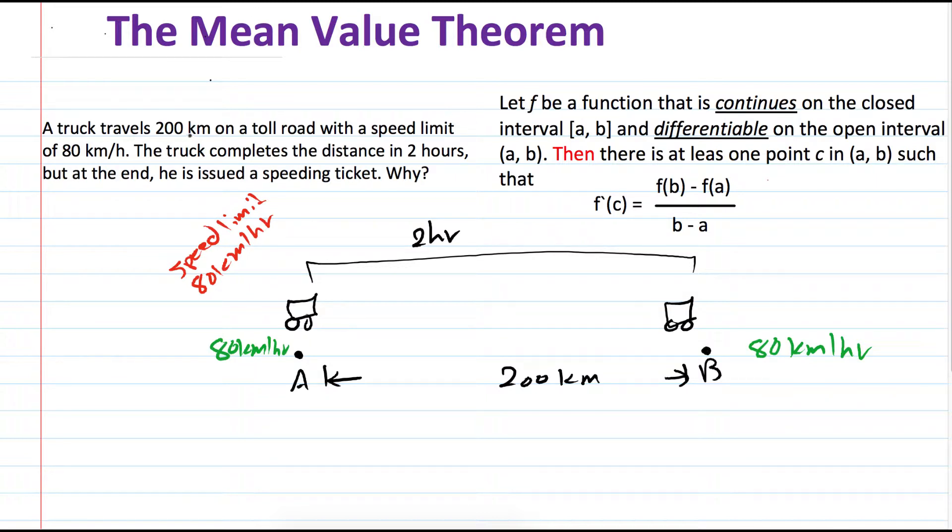Basically, if he traveled 200 kilometers in two hours, that means he traveled 100 kilometers in one hour. So his average speed is 100 kilometers per hour.